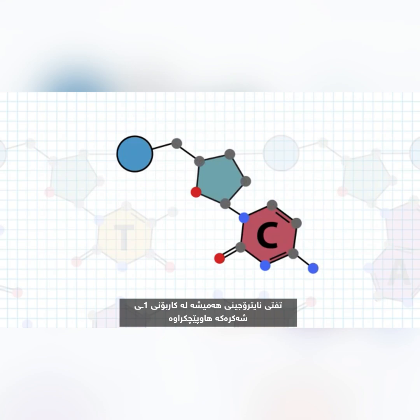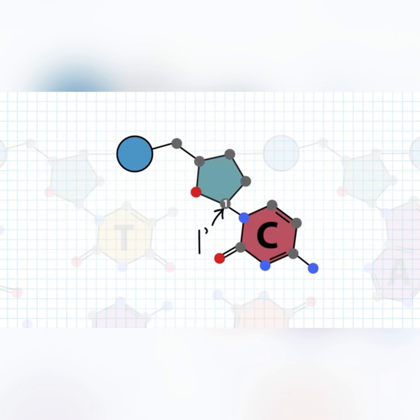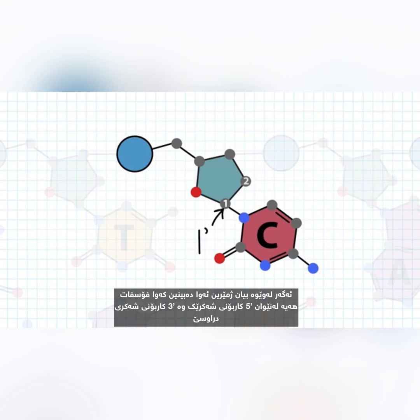The nitrogenous base is always attached at the 1' carbon of the sugar. If we count from there, we can see that there is a phosphate between the 5' carbon of one sugar and the 3' carbon of the neighboring sugar.